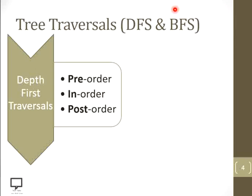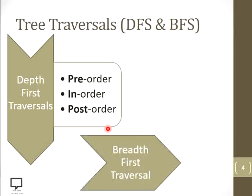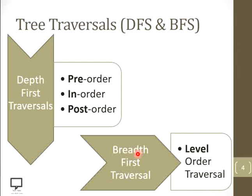Let's go forward to another technique which is Breadth First Search traversal. Breadth is nothing but the level, or the level at which the tree grows. That's why in Breadth First Traversal, the tree will get traversed according to level. It is also called level order traversal.